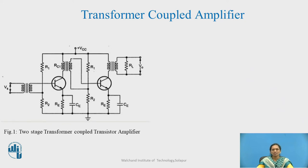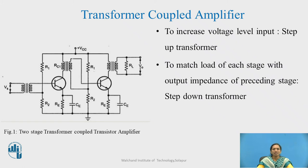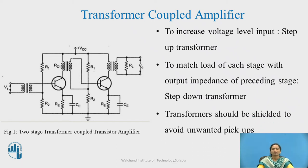Figure 1 shows a two-stage transformer coupled amplifier where we have an input transformer, which is always a step-up transformer to improve the strength of the input signal. All further transformers are step-down coupling transformers. We employ a bypass capacitor, and you can also have a parallel capacitor with resistor RB to obtain good signal strength or to avoid interference from unwanted signals. The transformers must be shielded to avoid unwanted pickups.